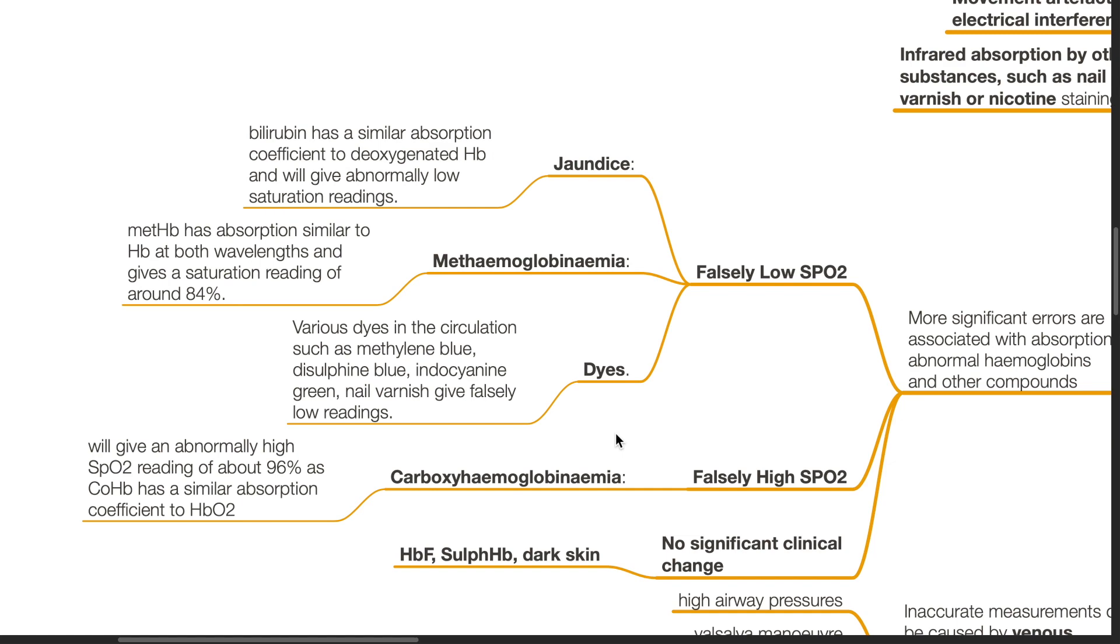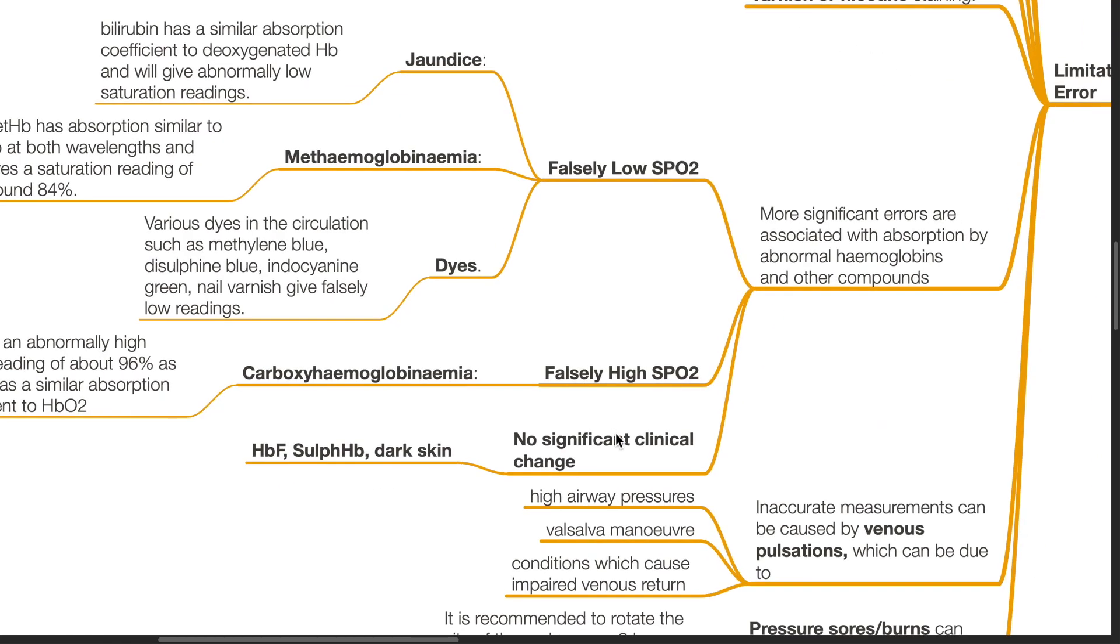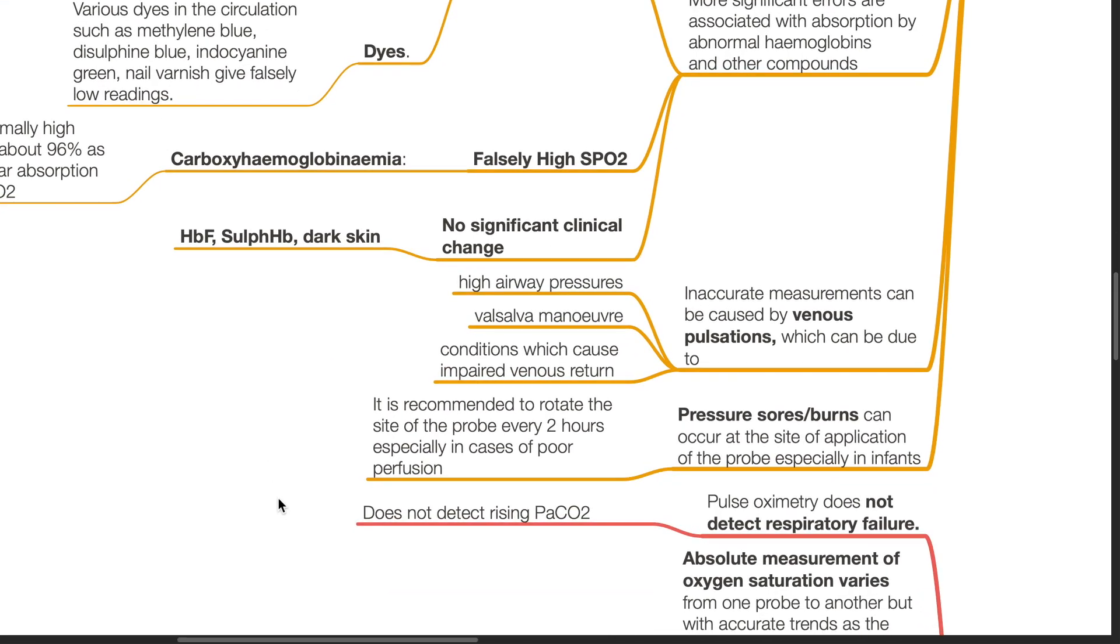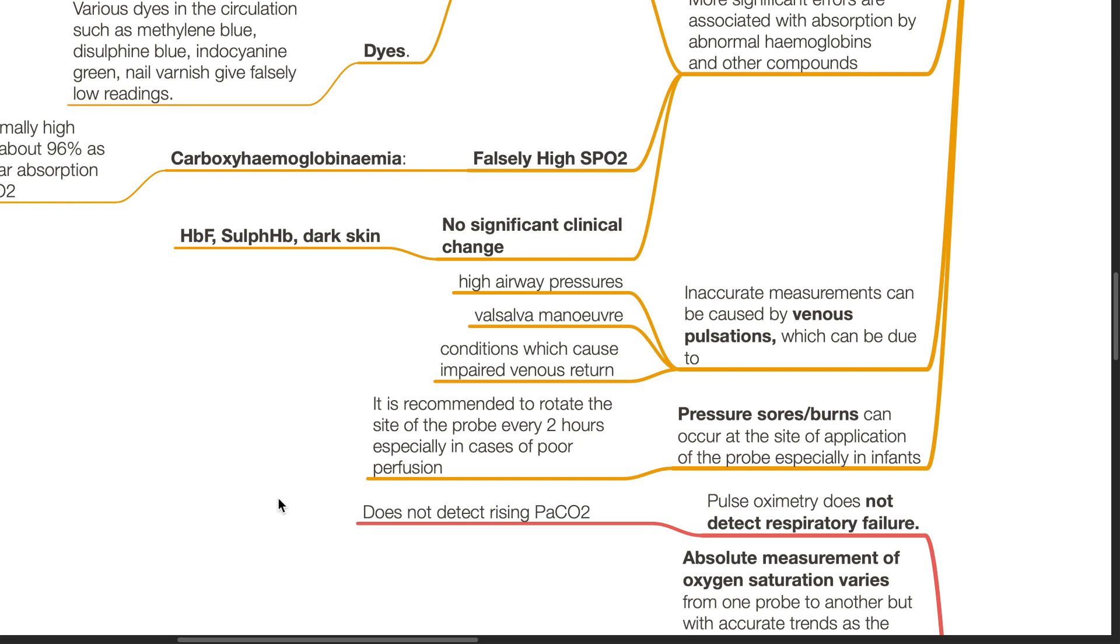There will be no significant clinical change in the presence of HbF, sulfur hemoglobin and dark skin pigmentation. Inaccurate measurements can be caused by venous pulsations which can be due to high airway pressures, the Valsalva maneuver and conditions which impair venous return.